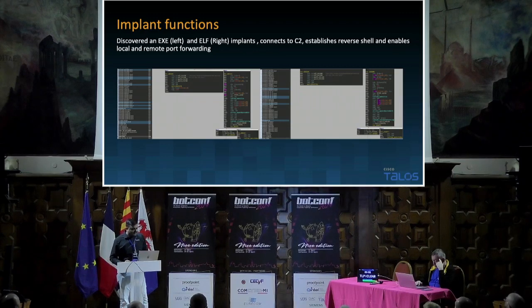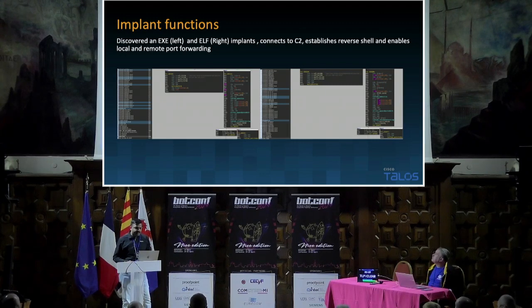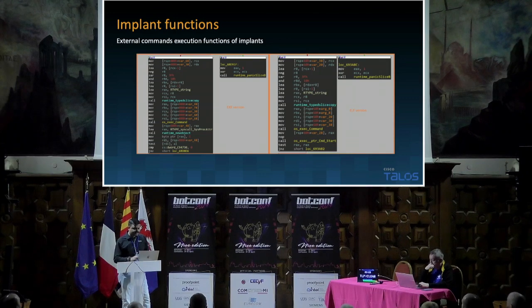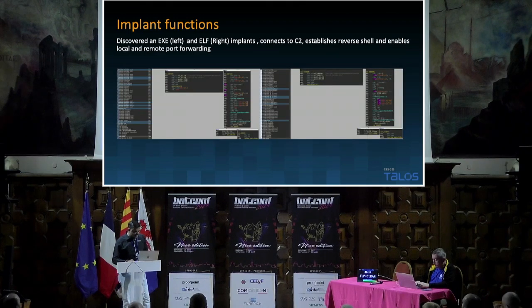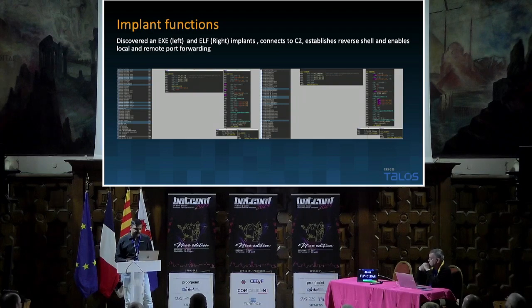I found a few samples — EXE and ELF — and a snippet of the functions shows they establish the reverse shell and enable local and remote port forwarding in both versions. Also the commands to execute functions in the implants are visible in the samples. Let's focus on the IP address found in one of the functions, which I'll discuss later when talking about connections.